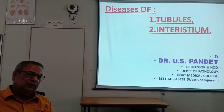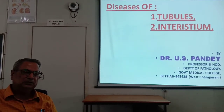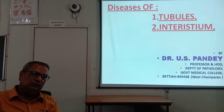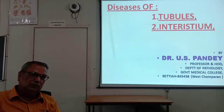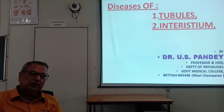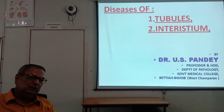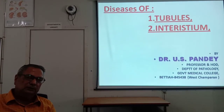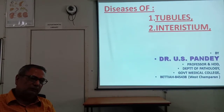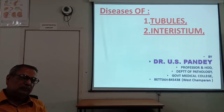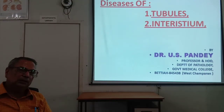In the last two classes I discussed glomerulonephritis in detail. In the first class I covered acute rapidly proliferative post-streptococcal and non-streptococcal glomerulonephritis, rapidly progressive glomerulonephritis, and minimal change disease. In the subsequent class I discussed membranoproliferative glomerulonephritis, membranous glomerulonephritis, focal segmental glomerulonephritis, focal glomerulonephritis, IgA nephropathy, and chronic glomerulonephritis.